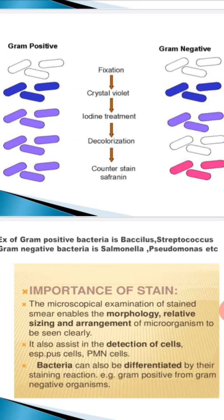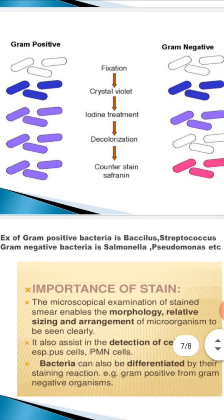In gram negative bacteria, as I told you, the peptidoglycan membrane is only 2 to 3 layers thick. So when we put alcohol on it, this membrane is disrupted — the complex comes out, dissolves in the alcohol, and the ions move out. So the gram negative bacteria become colorless.